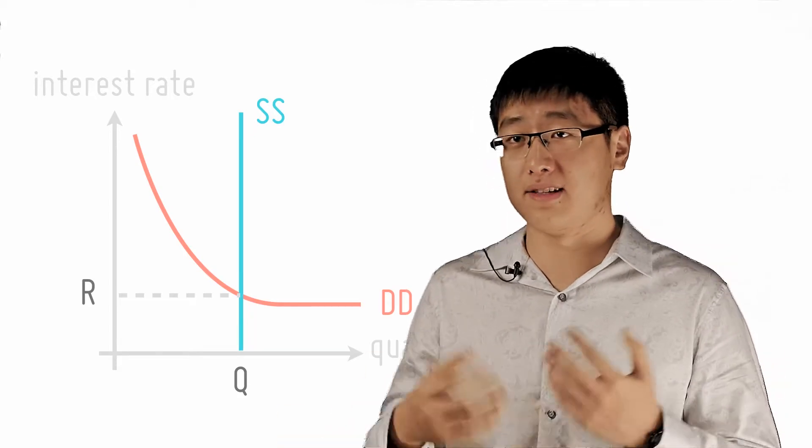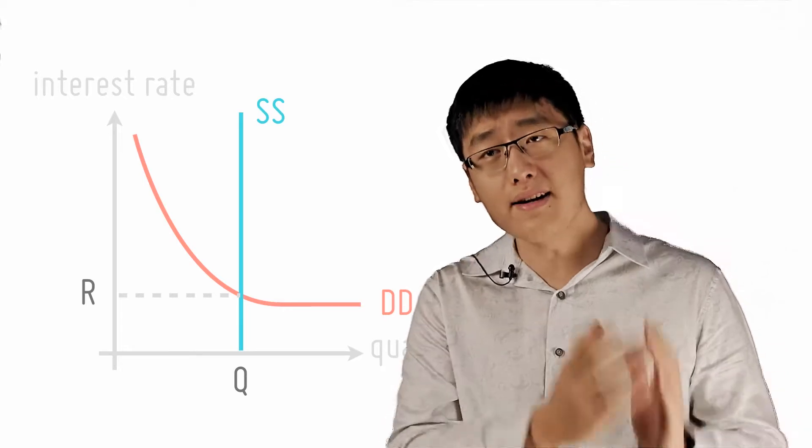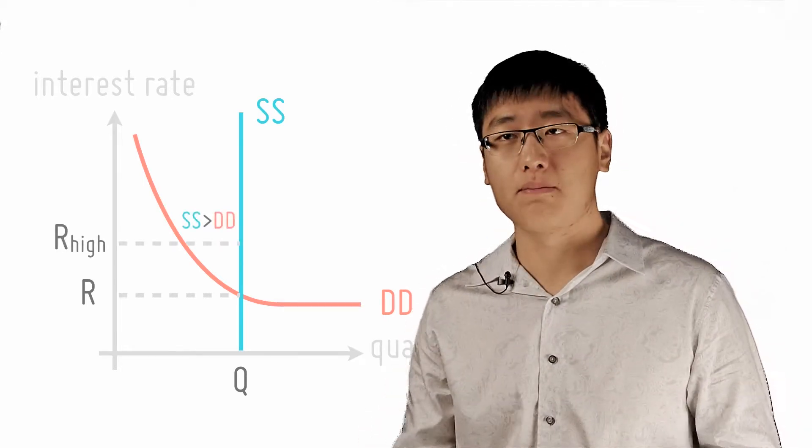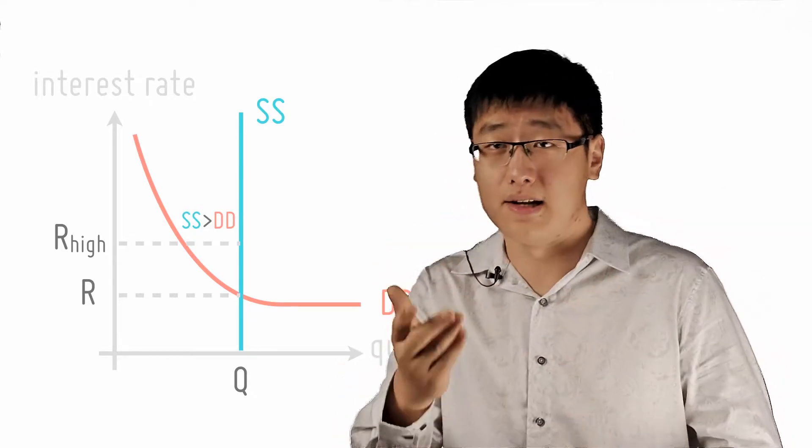The intersection of the money demand and the money supply gives a short-run interest rate. Why? Because any interest rate above this equilibrium will mean money supply is higher than money demand. Then there will be more people willing to supply money than demanding money.